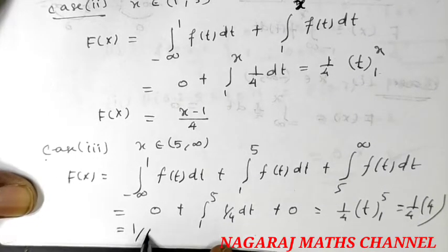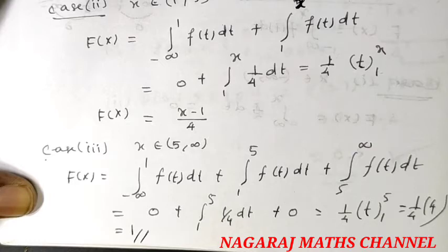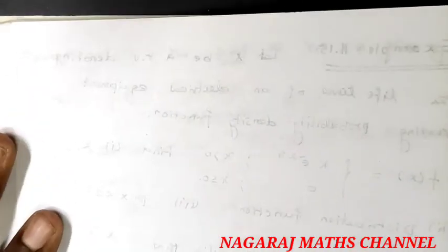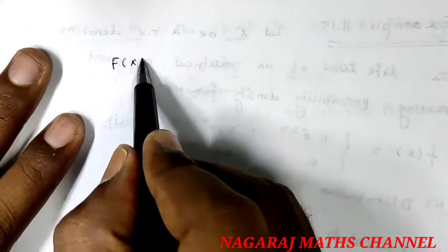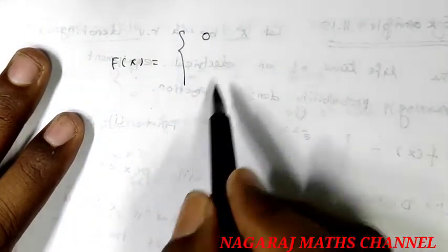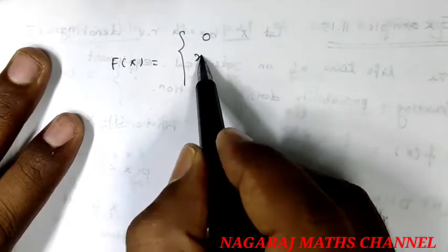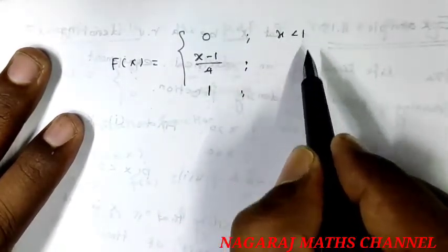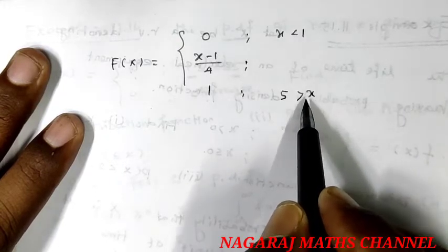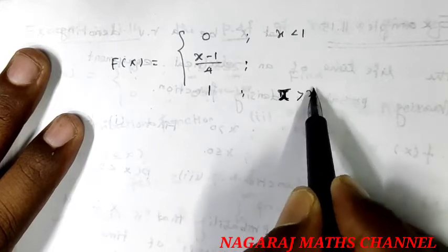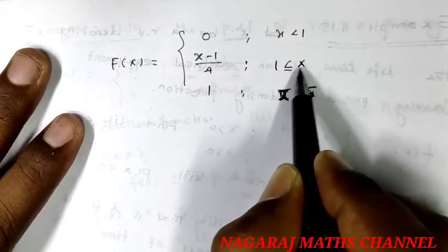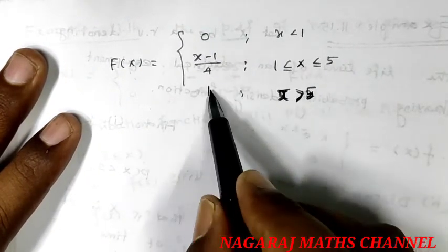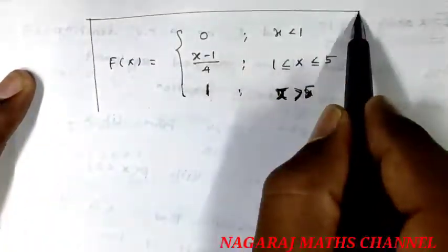Finally, we have the capital F(x), the cumulative distribution function: F(x) = 0 when x < 1; F(x) = (x − 1)/4 when 1 ≤ x ≤ 5; and F(x) = 1 when x > 5. This is the cumulative distribution function.